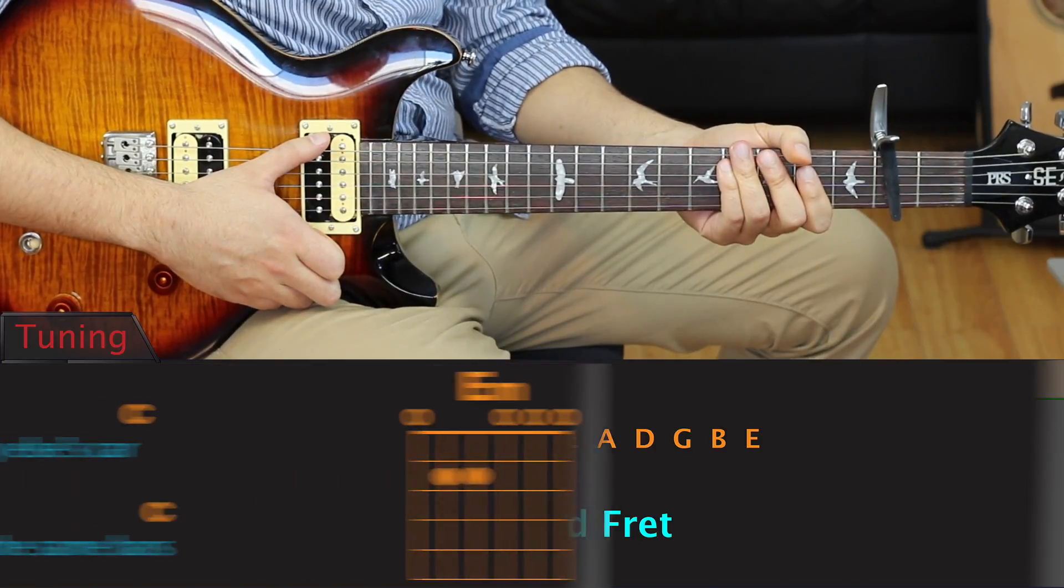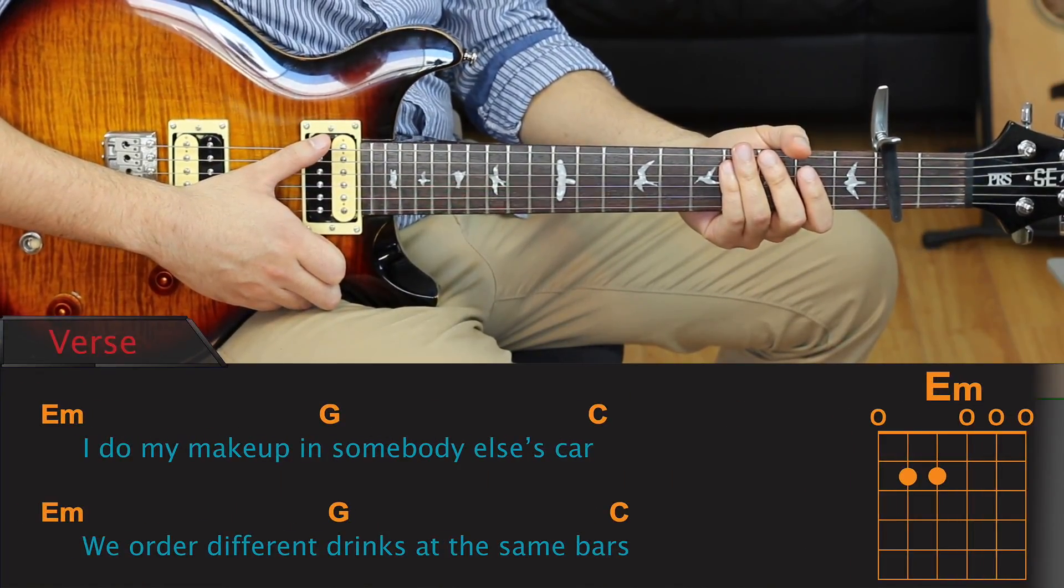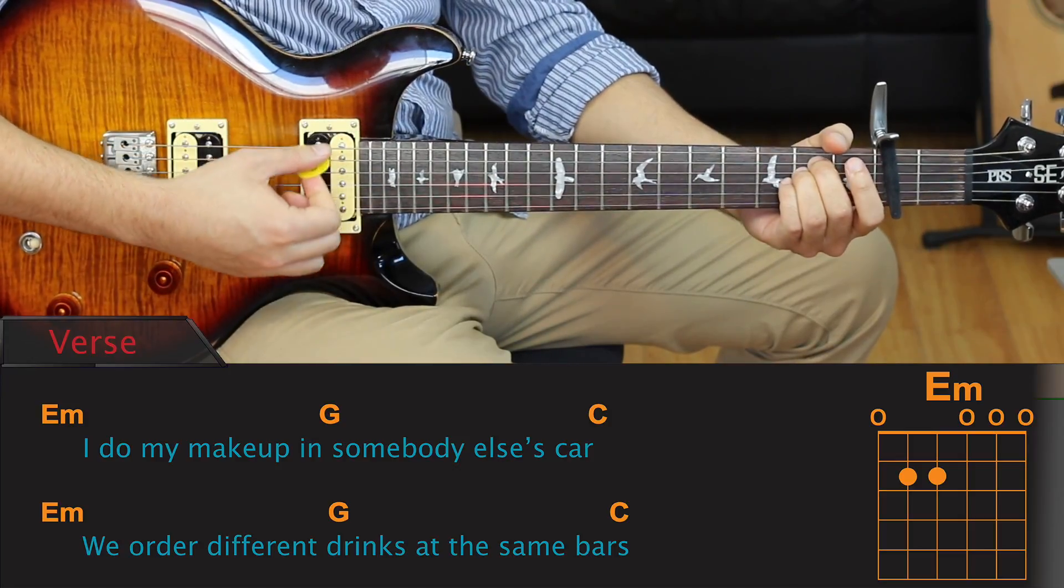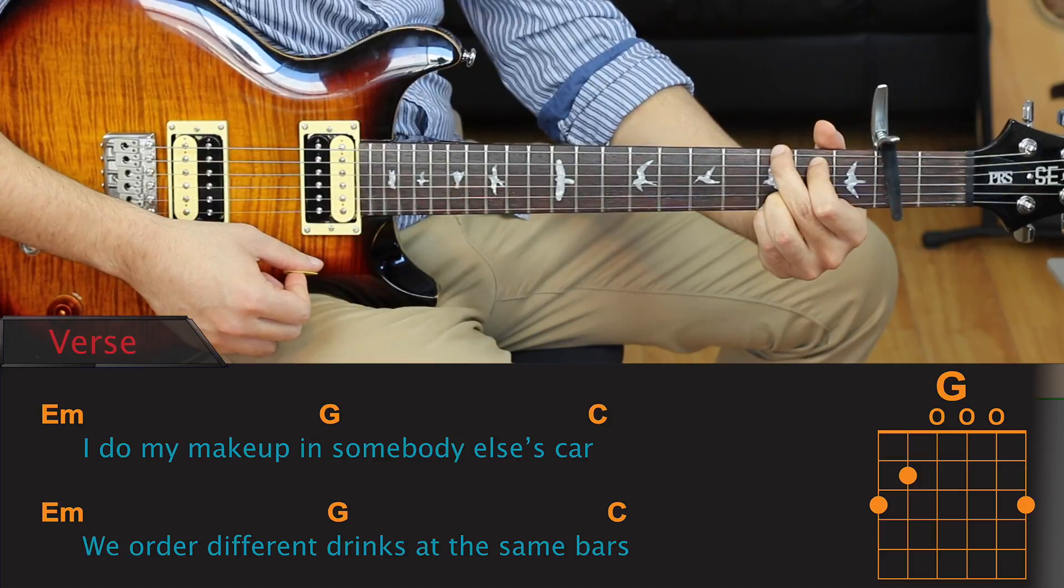Alright, let's have a look at the opening verse. The verse is really straightforward. We're only going to be using three chords: an E minor, a G, and a C.